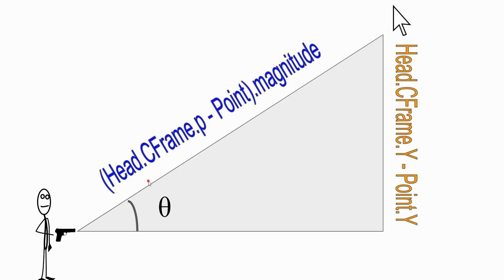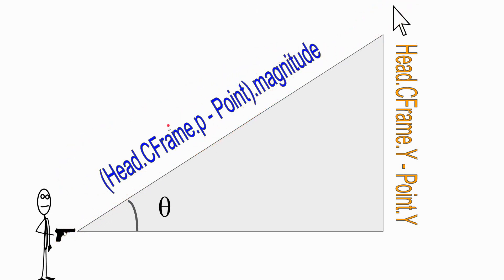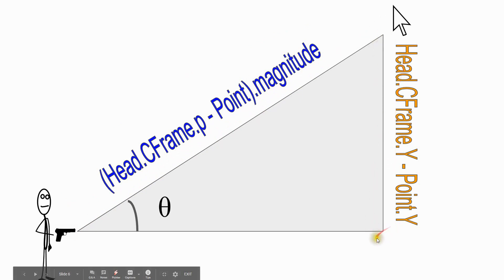We need to figure out the length of these two sides. Starting with the hypotenuse — the side from the gun to the mouse — it's calculated with this line of code here. What they're doing is taking the position of the head, which is going to be a vector with an x, y, and z part, and also taking the position of the mouse. They subtract those two vectors and take the magnitude of the result, which gives the distance — the length of the hypotenuse side of the triangle. To figure out the length of the opposite side, going from the top corner down to the bottom corner, it's calculated with this line of code. The basic idea is we take the height of the mouse (point.y) and subtract from it the height of the head (head.CFrame.y), giving us the length of the opposite side.